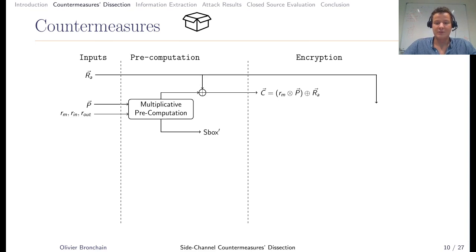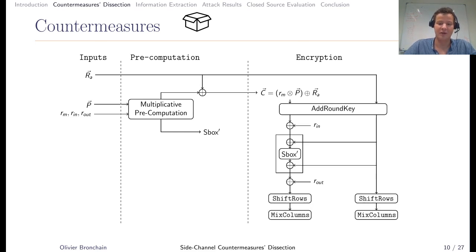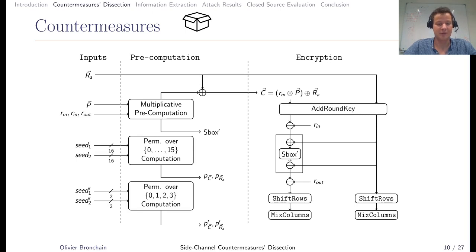This is for masking, but you also have shuffling, so you have inputs for shufflings that are seeds. Based on these seeds, we will derive some permutations. These precomputed permutations will be used during the encryption phase.